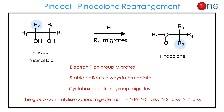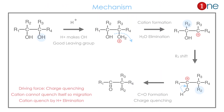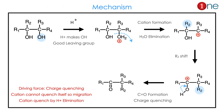A stable carbocation forms as the intermediate. In cyclohexane systems, the trans group always migrates. The migrating ability order is: hydrogen, phenyl, then tertiary, secondary, and primary alkyls. The mechanism begins with protonation of the alcohol group, forming the carbocation.